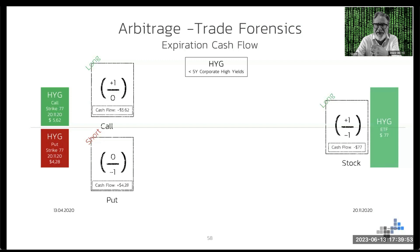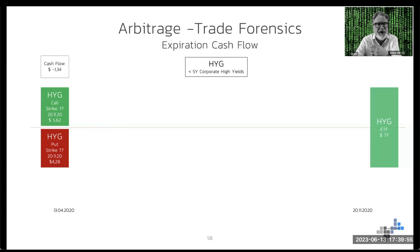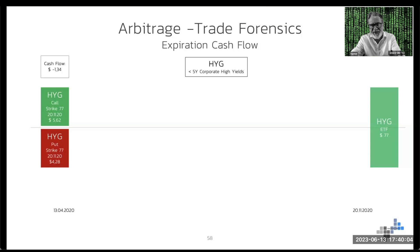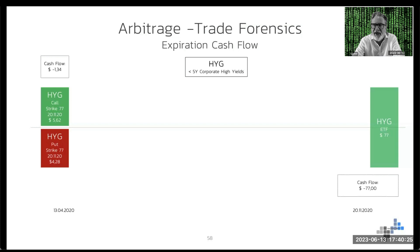Because I've traded the 77 strike, I will show you an example about that in a second. Here we have the cash flow on the synthetic side where we went long the underlying in seven months' time. You have to pay for the call $5.62 and you receive by selling the put $4.28. So your cash flow is $1.34 debit. And you will get $77 no matter what in November. Is that actually true? Let's make an example.